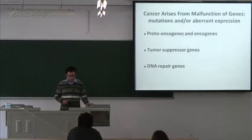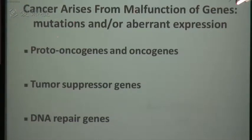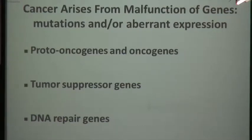Through decades of study, it is generally accepted that cancer is a genetic disease — more precisely, cancer arises from malfunction of genes, including mutation and/or aberrant expression of genes. There are three categories of genes involved in cancer development: proto-oncogenes and oncogenes, tumor suppressor genes, and DNA repair genes.